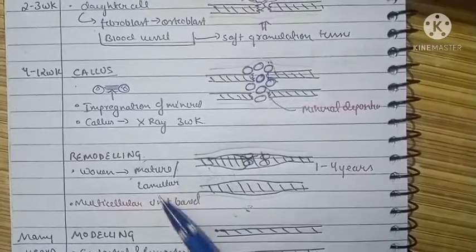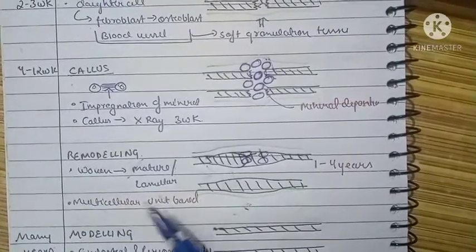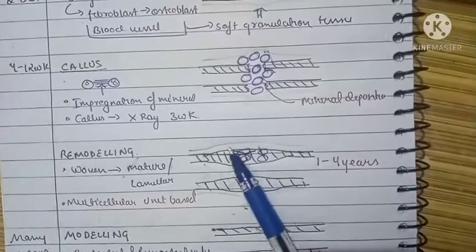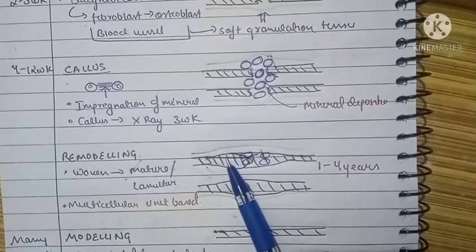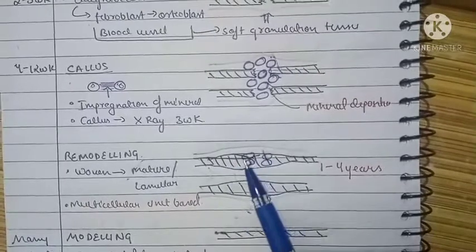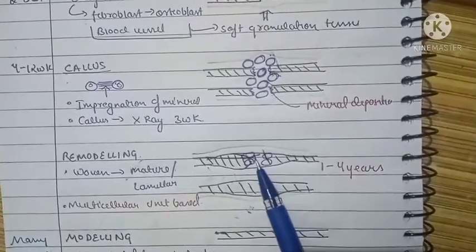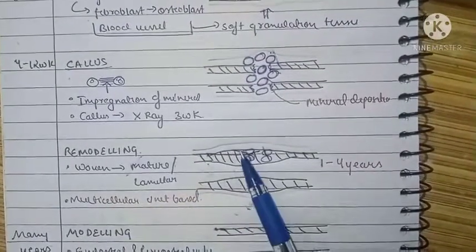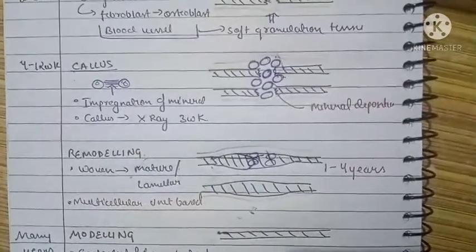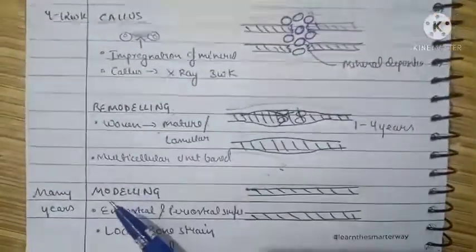The formation of lamellar bone is described in multicellular unit-based process. It means that a part of the bone that is woven will be converted into mature bone, following which other parts that are still woven will be converted into mature bone. So units of bone are converted consecutively into lamellar bone.